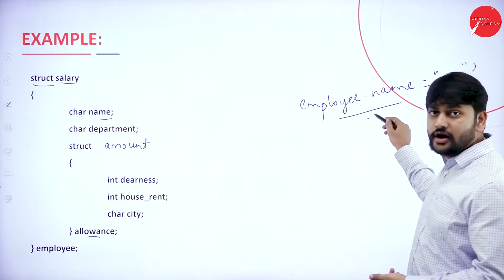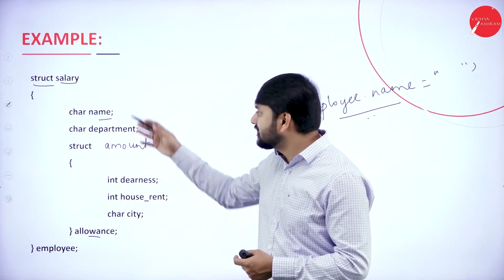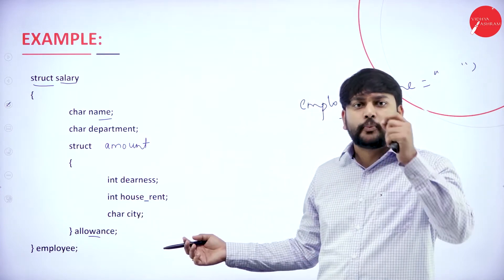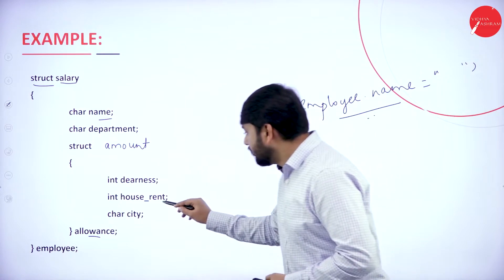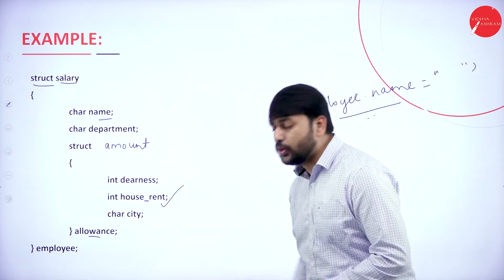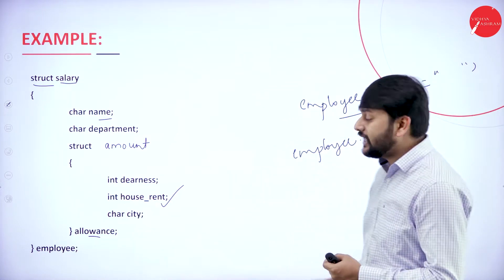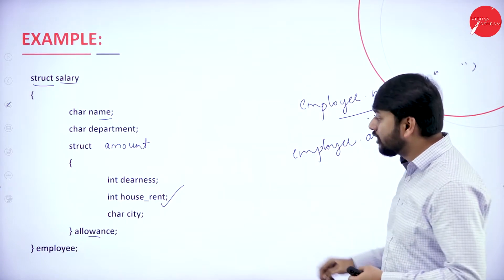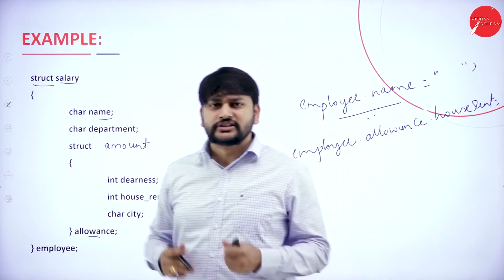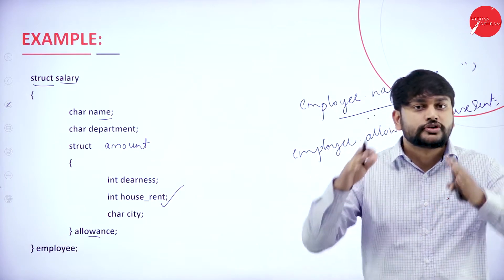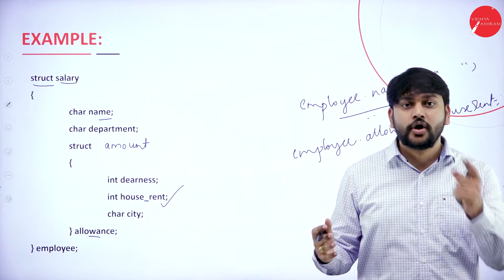How do I access the city or nested fields? You should consider those as character arrays. For example, how do I access house rent? First use employee, then dot allowances, then dot house_rent: employee.allowances.house_rent = whatever value you want to give. This is how you access variables in a nested structure, and this is what you need to remember with respect to nested structures.